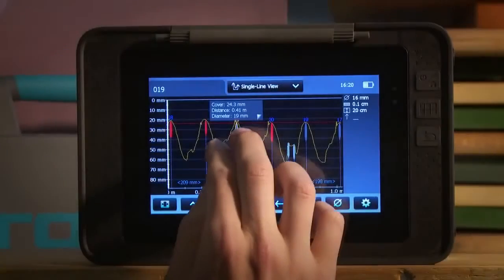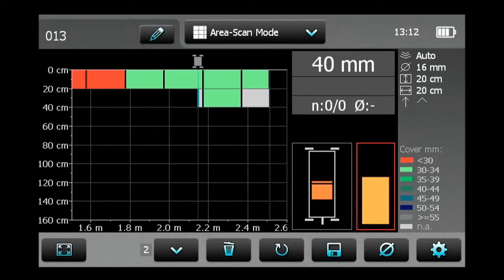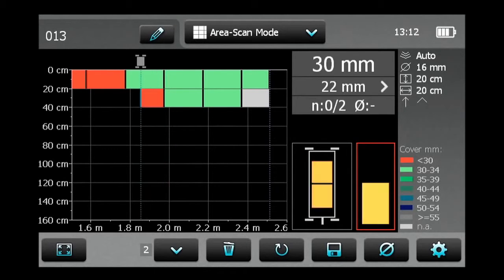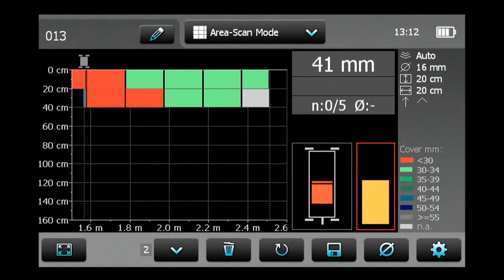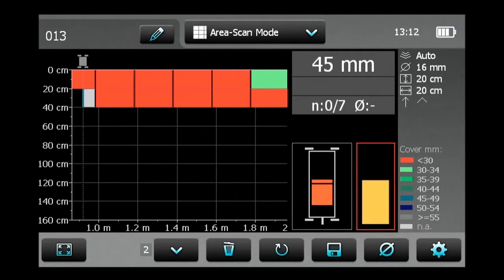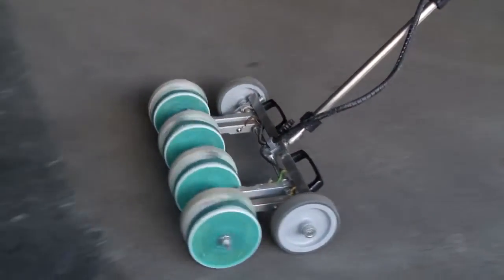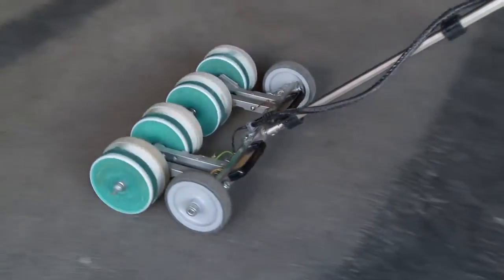Each line can also be viewed individually in a single line view. The grid display of the area scan mode allows a simplified view of the measured cover data. The user can select individual grid sizes. The area scan mode can also be used in combination with potential field measurements.